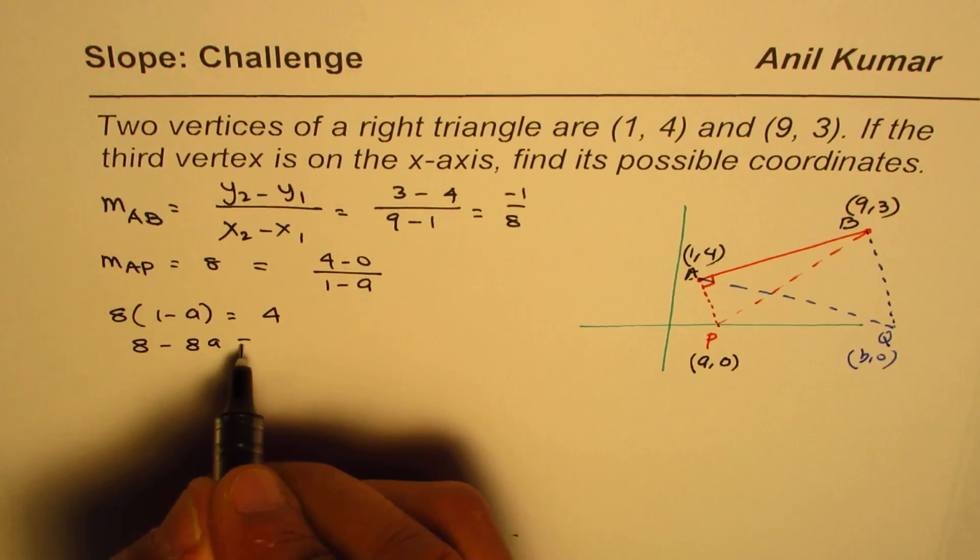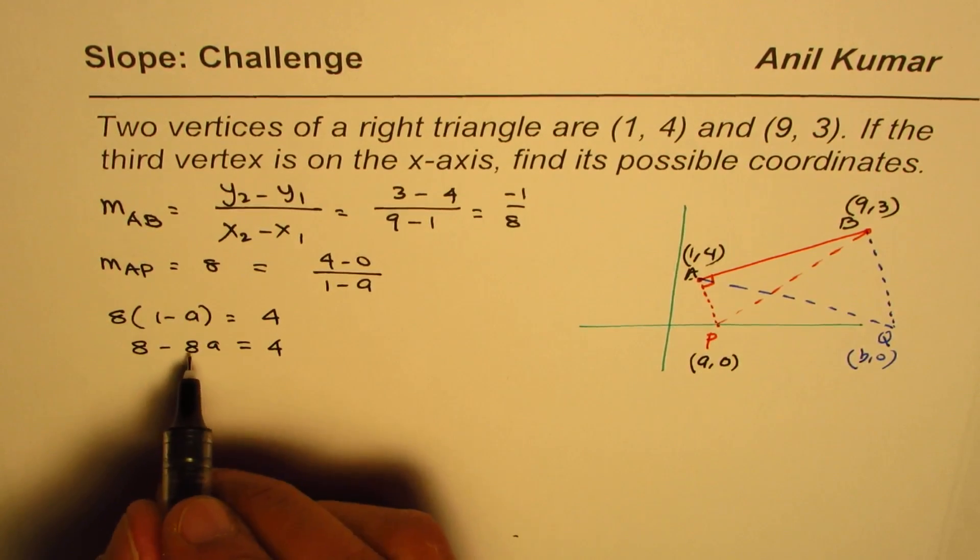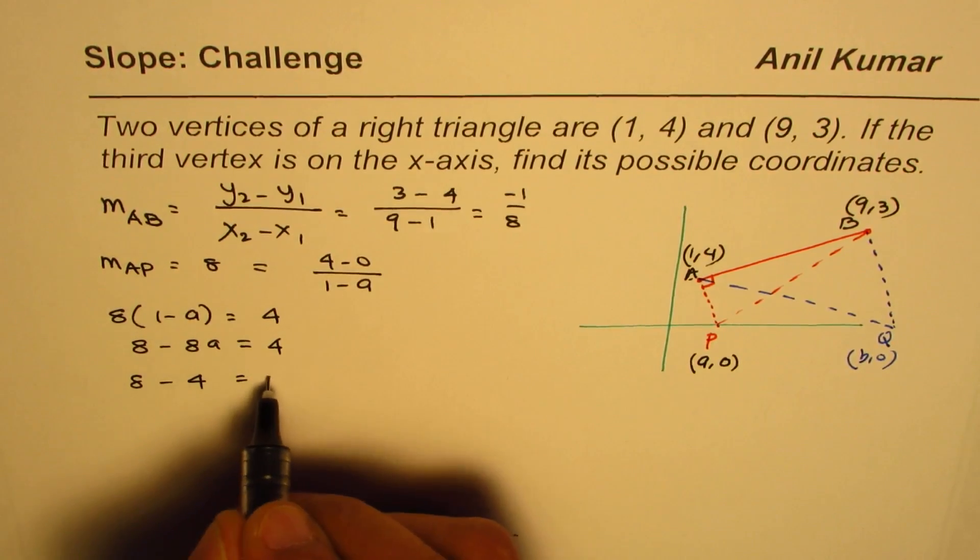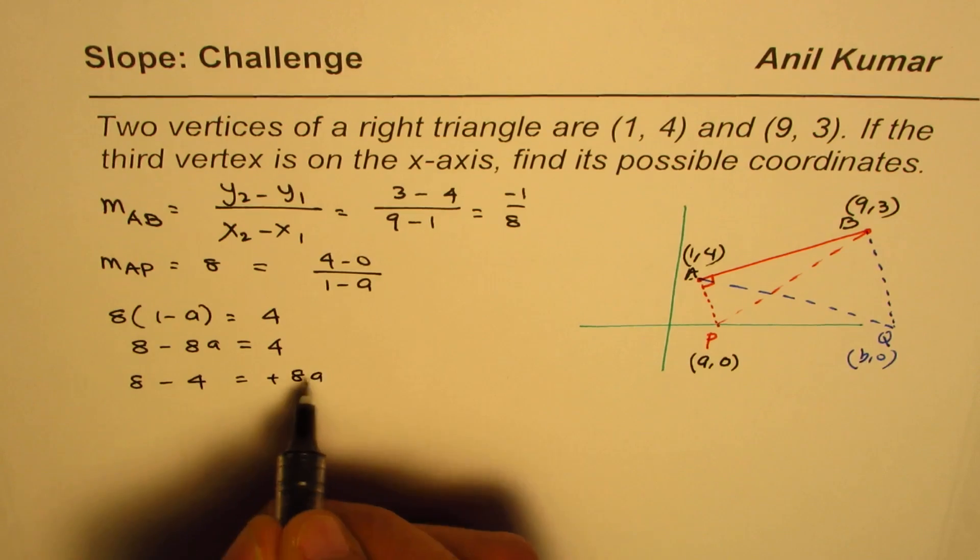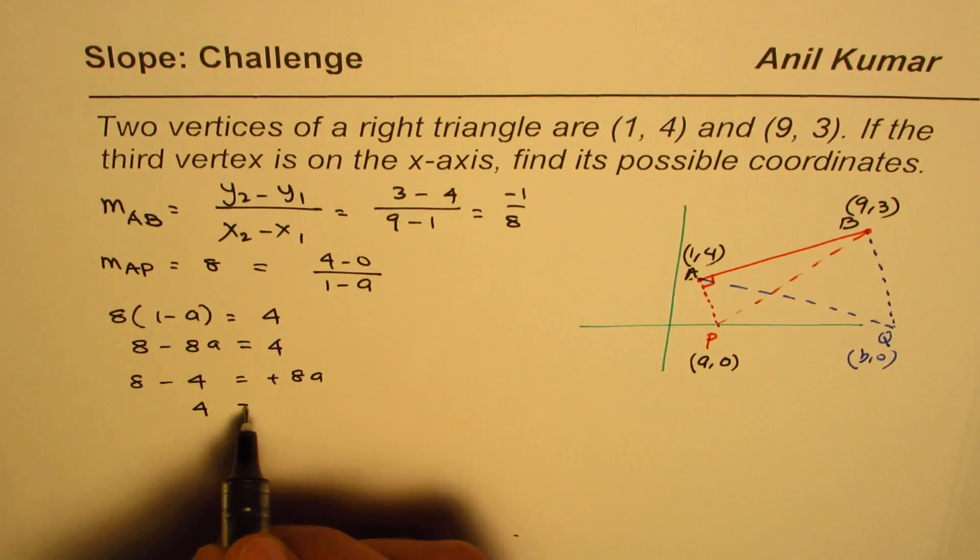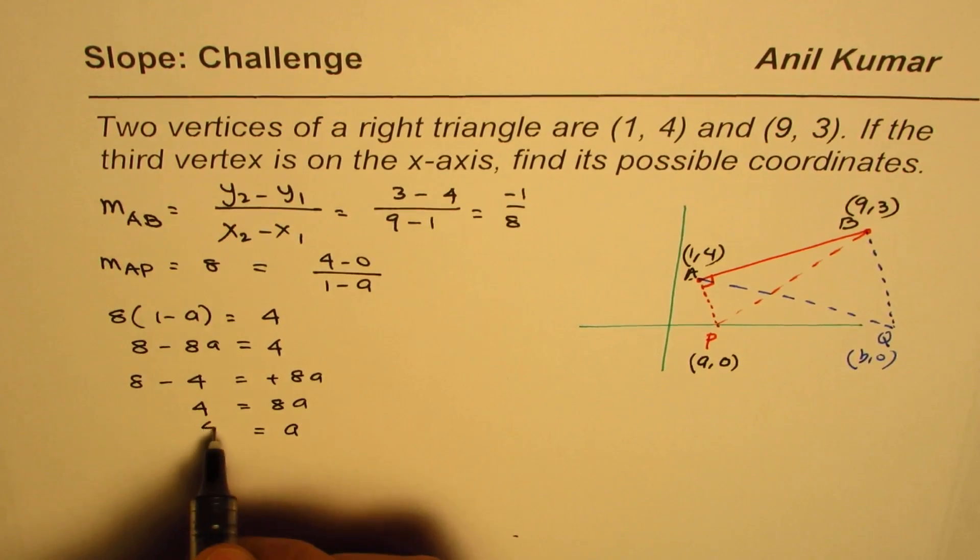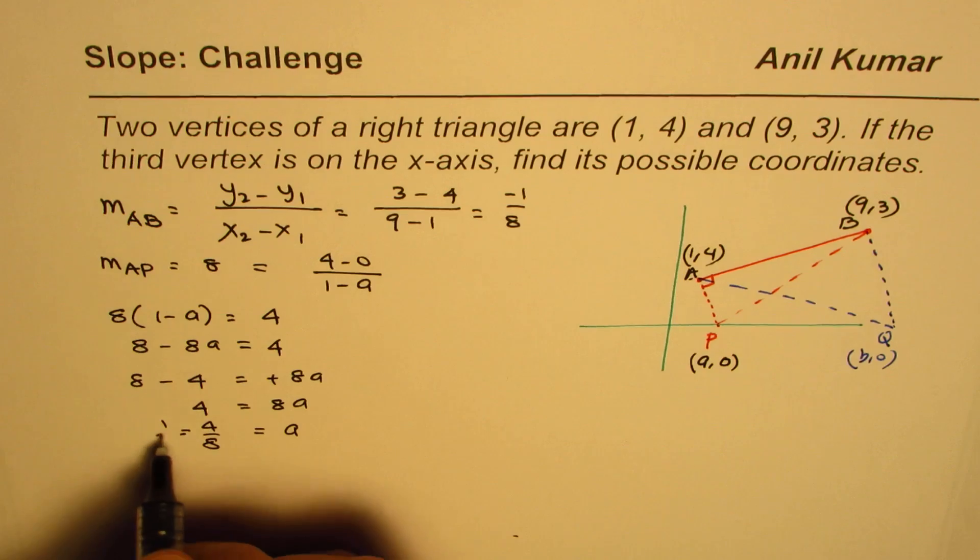Now bringing 4 to the left side and 8a to the right side becomes plus 8a. So we have 4 equals 8a, or a equals 4/8, which is 1/2. So this point seems to be (1/2, 0). So that is one possible solution.